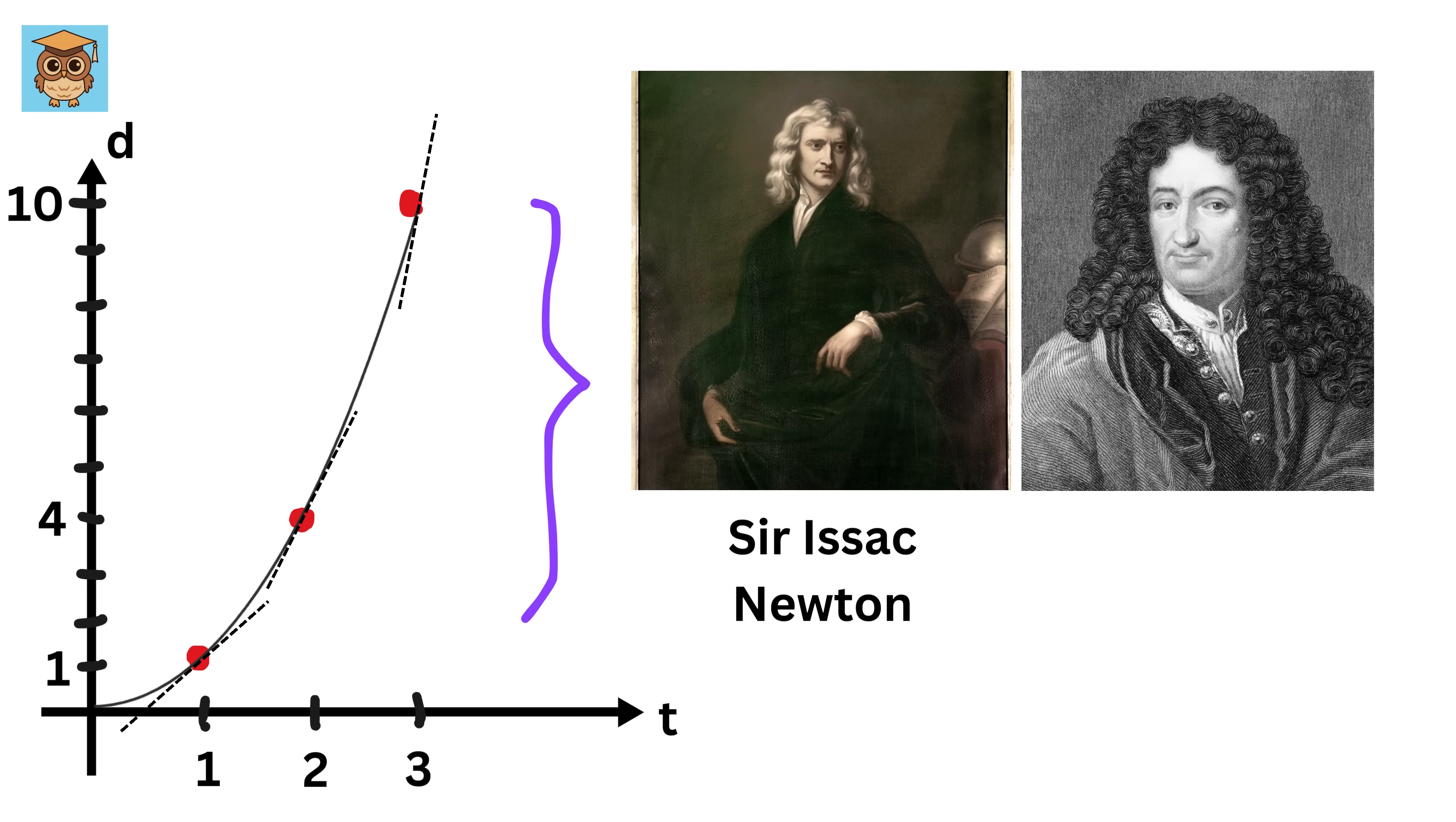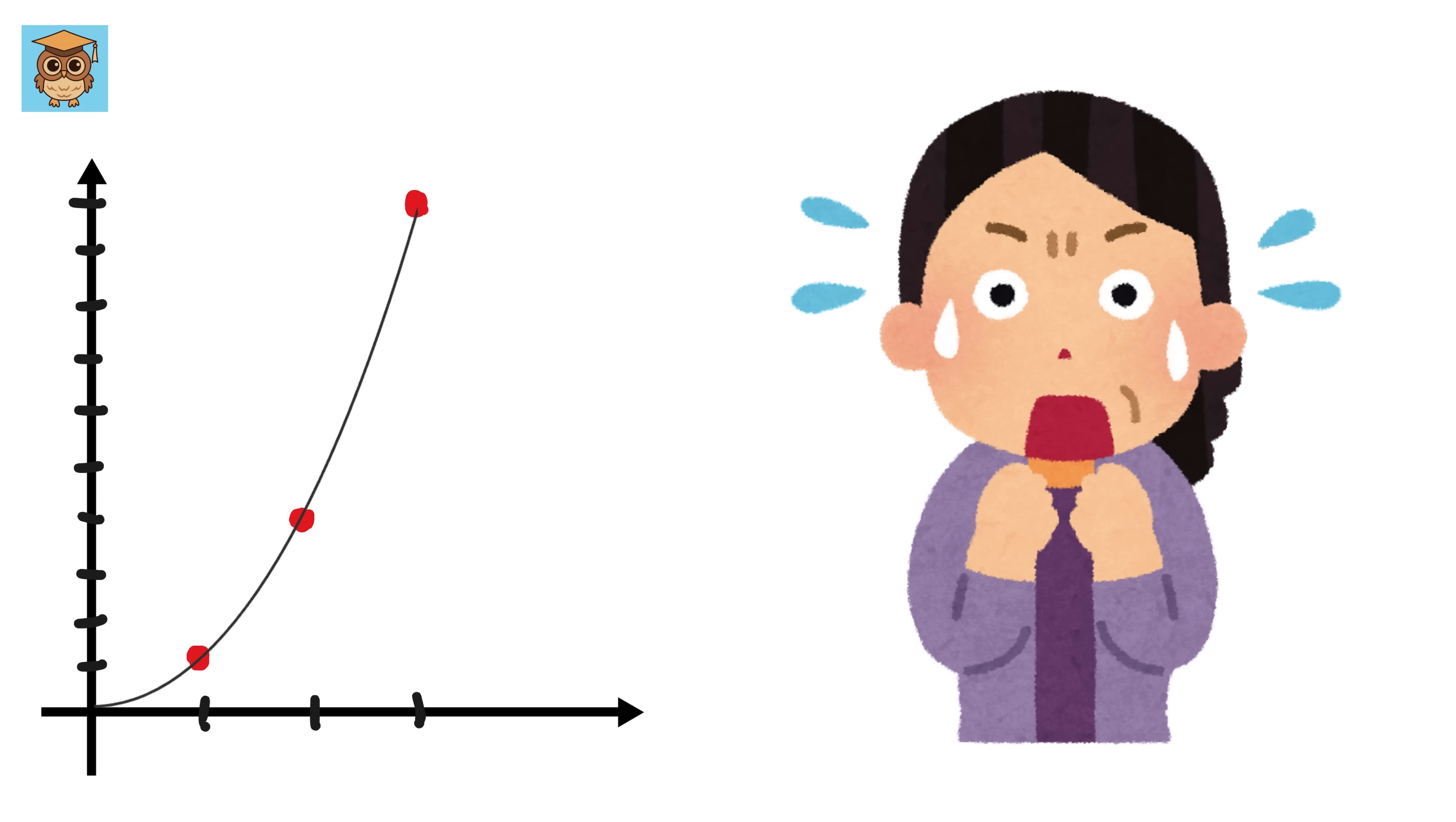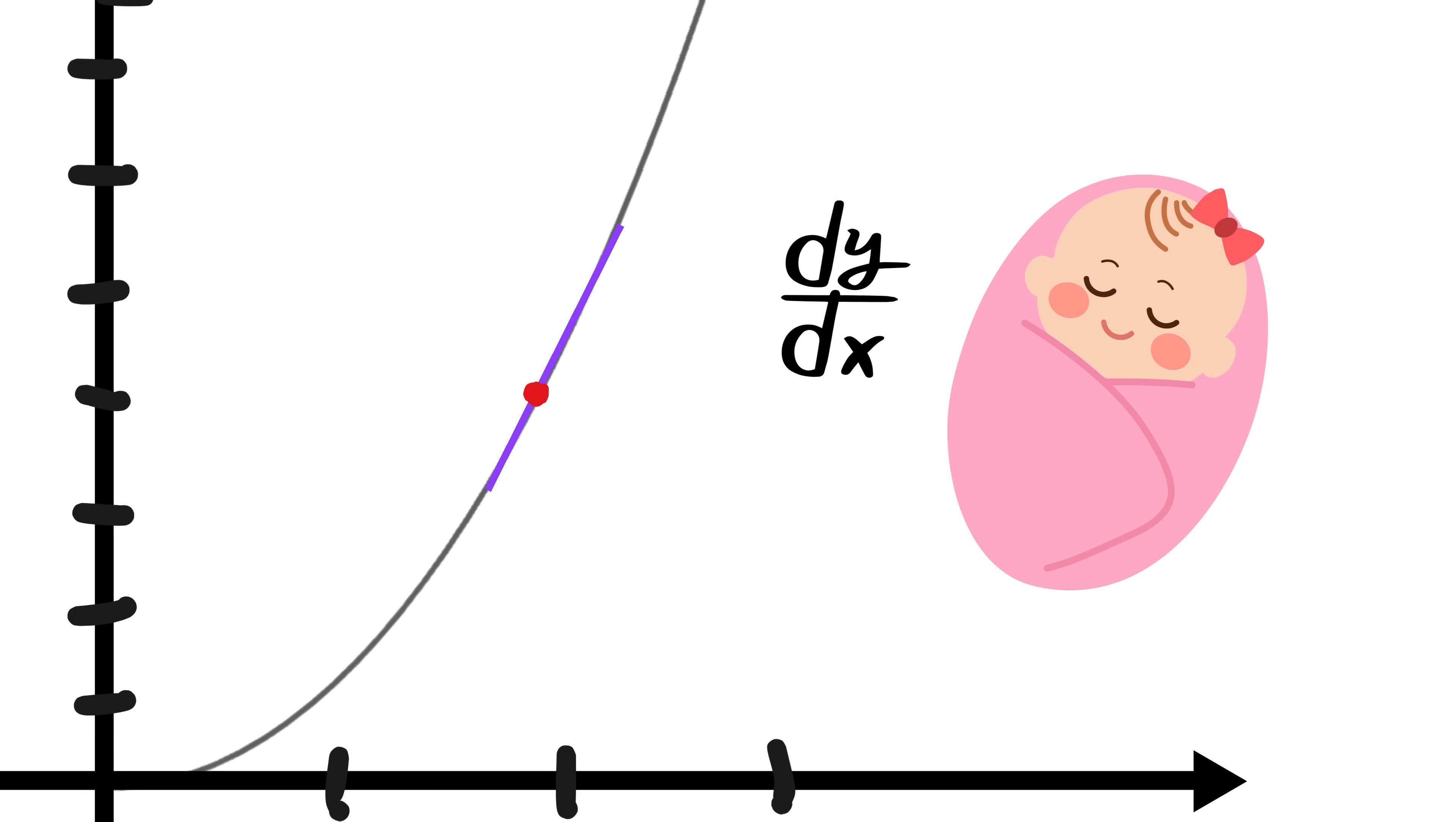And then came geniuses like Isaac Newton and Gottfried Wilhelm Leibniz in the late 1600s. Both of them, working separately, came up with a groundbreaking idea. Instead of thinking about the whole curve at once, they zoomed in really, really close, so close that the curve looked almost like a straight line. This is how the concept of the derivative was born.